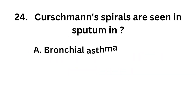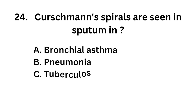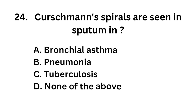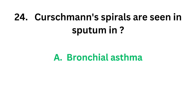Question number 24. Curschmann spirals are seen in sputum of: Option A: Bronchial asthma. Option B: Pneumonia. Option C: Tuberculosis. Option D: None of the above. The correct answer is Option A, Bronchial asthma.